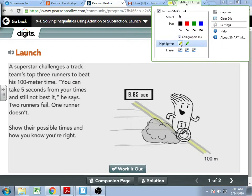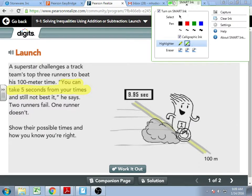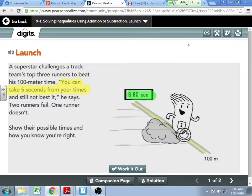Johnny shows up at this new track team. He says, I'm going to challenge your top three runners. You can take five seconds from your time, which is a lot in a 100-meter dash, and you still won't beat me. Johnny's 100-meter time is 9.95 seconds. He's crazy fast.